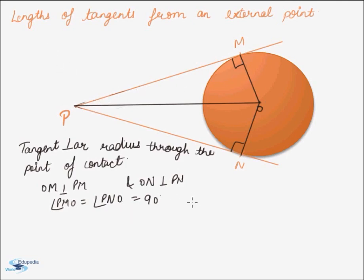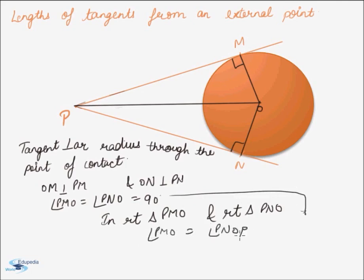Thus, in right triangles PMO and PNO, angle PMO is equal to angle PNO, that is 90 degrees each. Also, both triangles have the same hypotenuse PO.